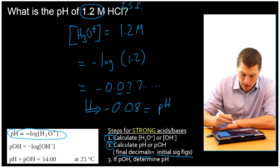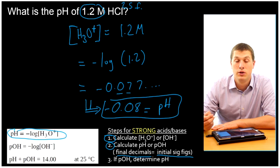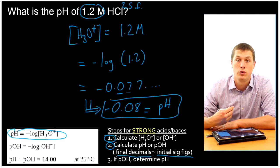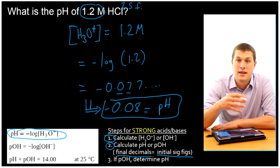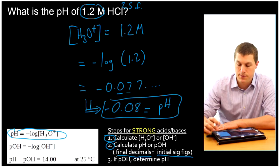That's equal to the pH. So when you take the log of something, the sig fig rule is take the number of sig figs you plugged into the log. That's how many decimal places you should have at the end. And so we get negative 0.08 for our pH. Let's go ahead and do an example of a base.